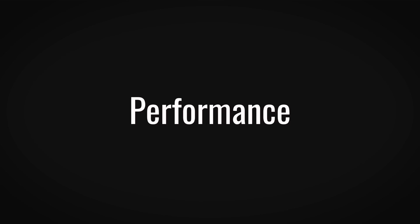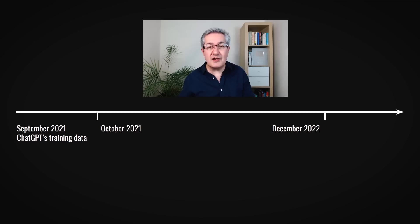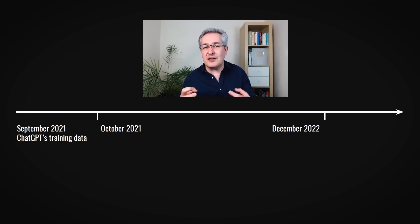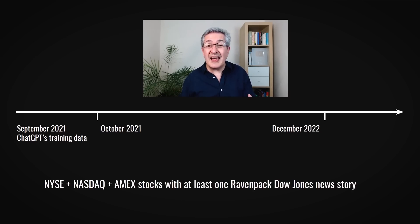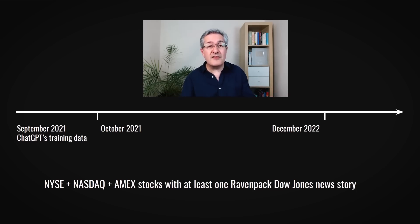So how well did the models perform? Whenever you're measuring performance, you have to be careful to do things out of sample, otherwise the model could know what happens to the stock price. Fortunately, the version of ChatGPT the researchers used had no training data after September 2021. By only using headlines from October 2021 to December 2022, the researchers ensured the model wouldn't have access to the answer. The stocks used had to have a news story published about them, taken from the Ravenpack Dow Jones news story feed, and they used stocks from the US exchanges — the New York Stock Exchange, NASDAQ, and the American Exchange.